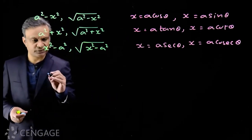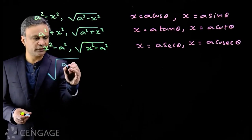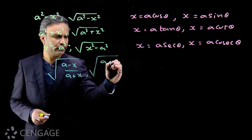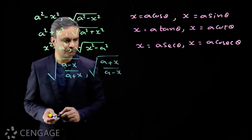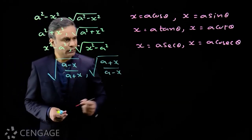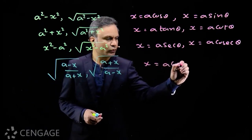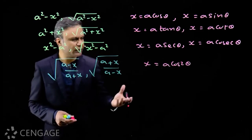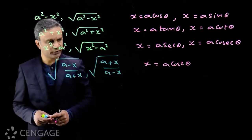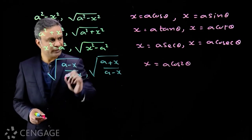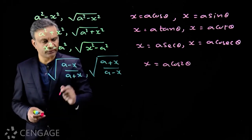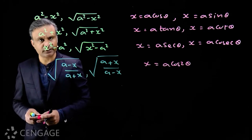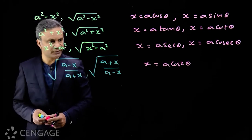Then we have some typical expressions like √((a - x)/(a + x)) or √((a + x)/(a - x)). We put x = a cos2θ. When we put x = a cos2θ, we get (1 - cos2θ)/(1 + cos2θ), which is tan²θ. And √(tan²θ) is tanθ.